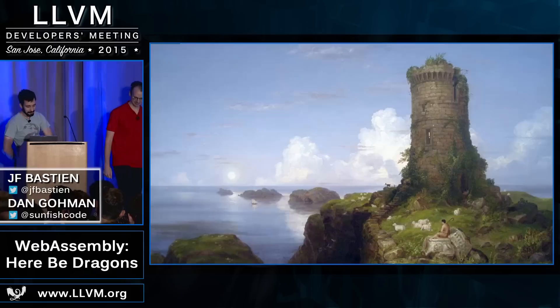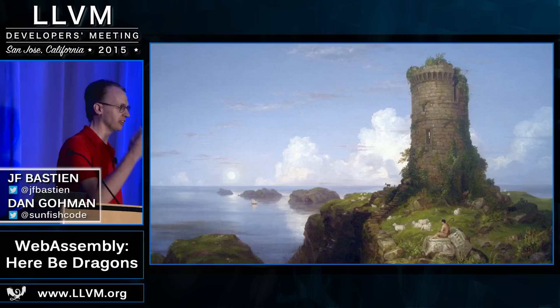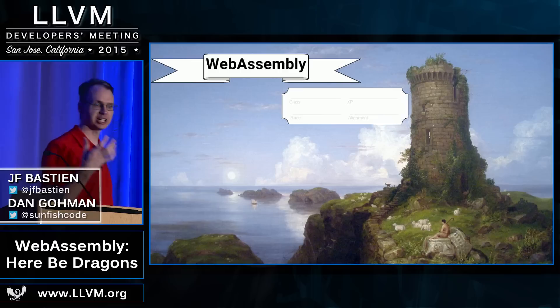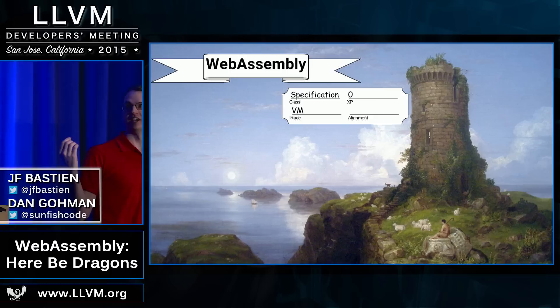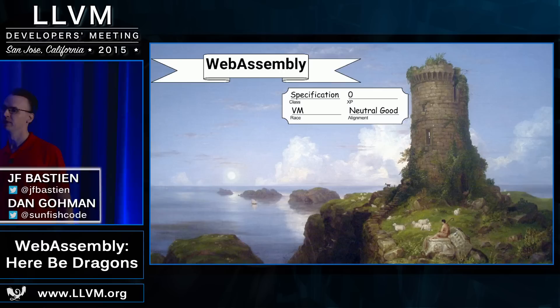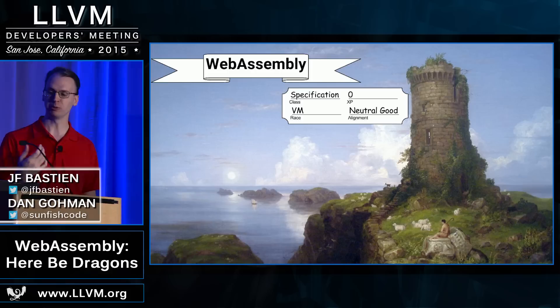To start off our adventure, we have to introduce our character. We have a starting level character — he's starting out — and we're going to give off his character sheet, as of course you do. WebAssembly's character is starting at level zero. He is a very inexperienced character. It's a virtual machine of sorts. We say he's neutral good. This sort of ambiguous phrase means that WebAssembly is not indicating a particular purpose. It doesn't say what you can or can't do. It's exposing the bare primitives of a platform to let you do whatever you want. We hope that WebAssembly will be used for good.